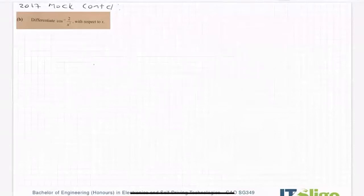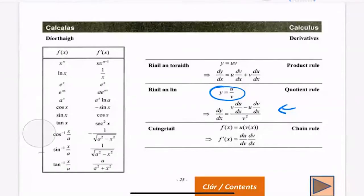So from the log tables we know that cos inverse of x over a is equal to minus 1 over square root of a squared minus x squared. Sorry, my writing is a bit crap there. Where did I get that? I'm getting it down here. So x over a is equal to minus 1 over a squared minus x squared.